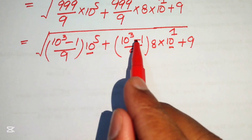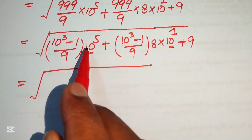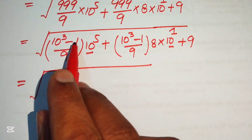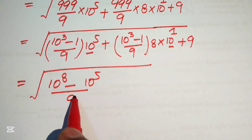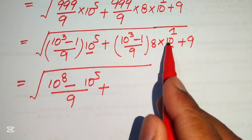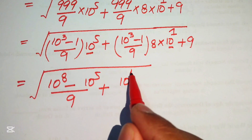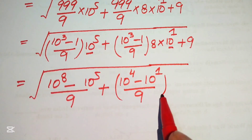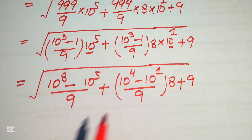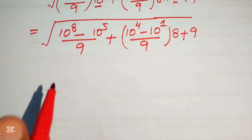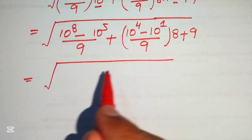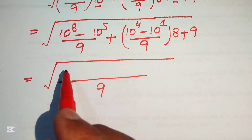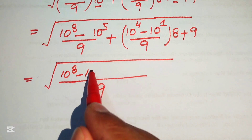Now we need to multiply these terms. It will be written as: square root of — when you multiply ten raised to power five by ten raised to power three it becomes ten raised to power eight — minus we multiply this term by one and get ten raised to power five, divided by nine. Plus here we multiply ten raised to power one on both terms and it becomes ten raised to power four, minus ten raised to power one, divided by nine, multiplied by eight. Plus we have nine. After this step we take the LCM, which is nine. When you divide nine by nine you get one, multiplied by the above term: ten to the power eight minus ten to the power five.